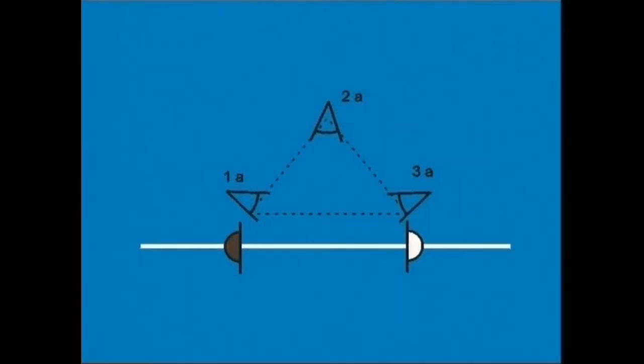Beste aldea aukeratu bagenu ere, triangelu bat osatuko genukeen eta kameraren hiru kokaguneak triangelu edo irukiaren hiru erpinak izango lirateke.